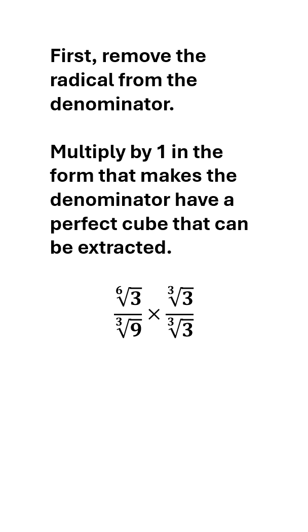First, we're going to remove the radical from the denominator. Now, how will we do that? We're going to multiply by 1 in the form that makes the denominator have a perfect cube that can be extracted.